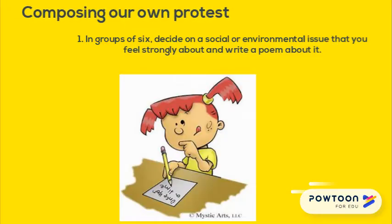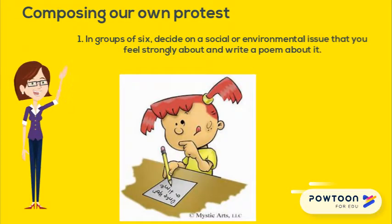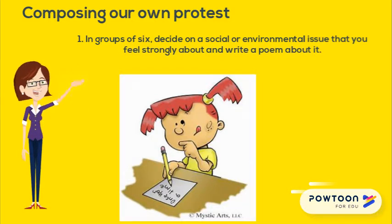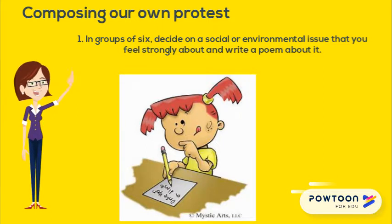Let's look at the activity: Composing our own protest. Number 1: In groups of 6, decide on a social or environmental issue that you feel strongly about and write a poem about it. Number 2: Put the poem to music and perform it for the rest of the class.